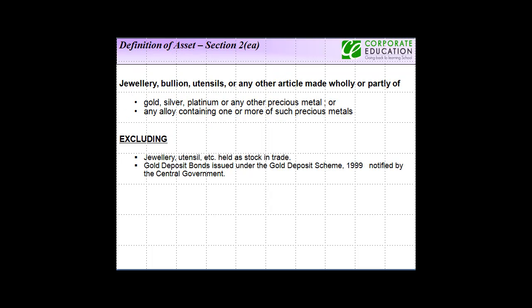However, there are certain exceptions as always. So there are certain exclusions which are there. And what is that? If the jewellery or the utensil, which would mean any bullion or other precious article, is held as stock and trade. So if there is a jeweller who keeps these things as stock and trade, then for him it will not be included within the definition of asset. And the second is gold deposit bonds issued under Gold Deposit Scheme, 1999 notified by the central government. So these bonds are also not included within the definition of asset and therefore are not chargeable to wealth tax.